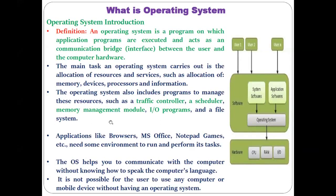The operating system, which we have been discussing for the last three lectures, is a kind of system program on which you can run different application programs and other system programs. It acts as a communication bridge or interface between the user and the computer hardware. The main tasks performed by the operating system include task management, allocation of resources such as memory, device, and processor allocation, and handling information.